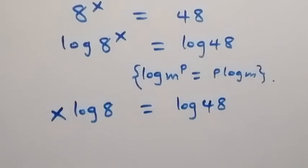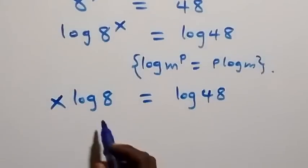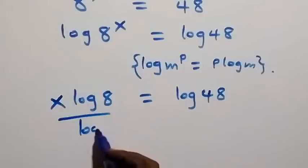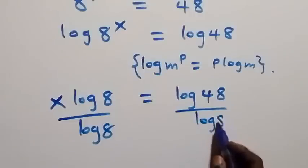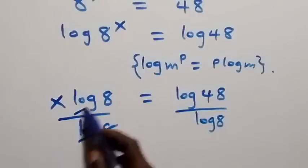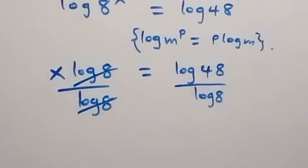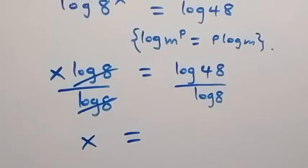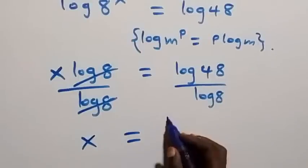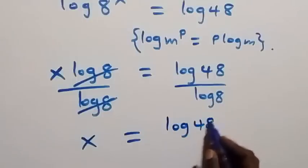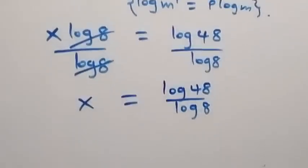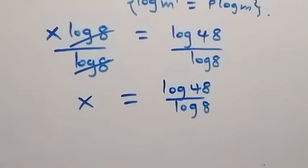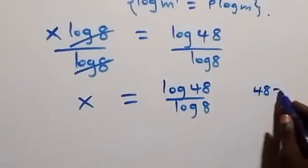Now let's divide both sides by log 8. We divide this side by log 8 and also this side by log 8. Then log 8 cancels out and we have x left, which equals log 48 over log 8.